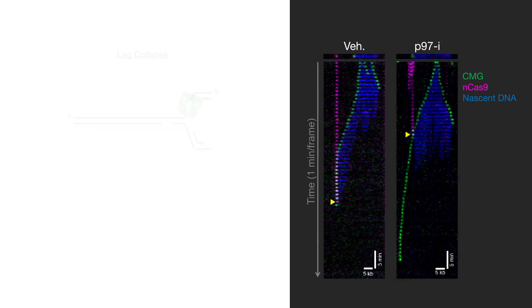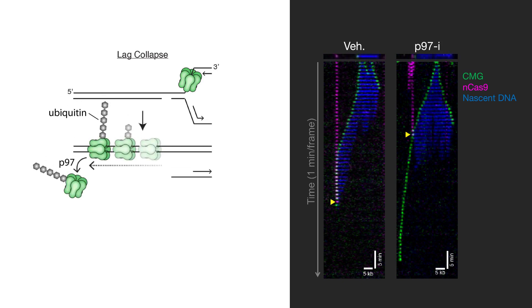This implies that normally when CMG encounters a nick in the lagging strand, CMG travels onto double-stranded DNA, undergoes ubiquitylation, and then is extracted by the p97 ATPase.